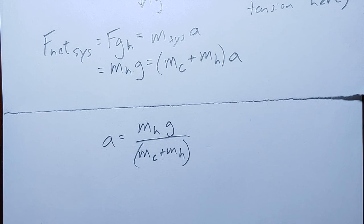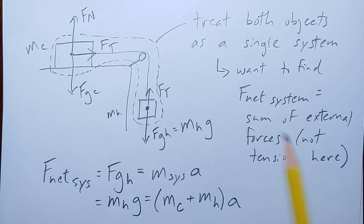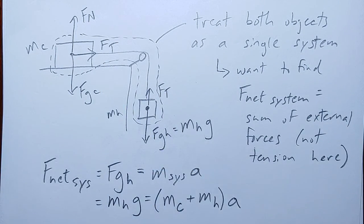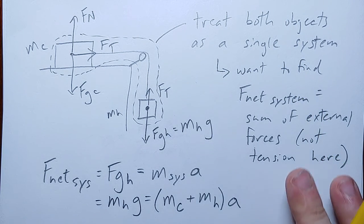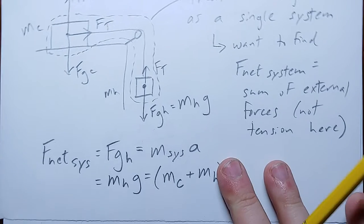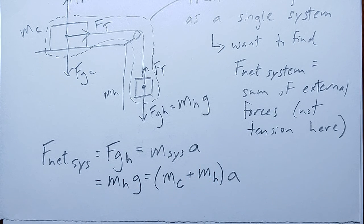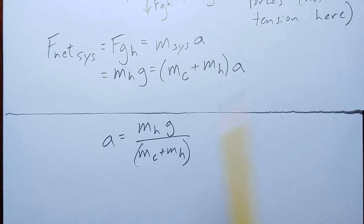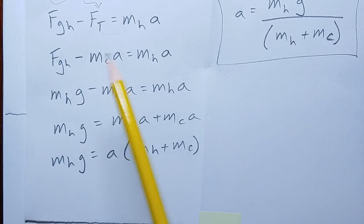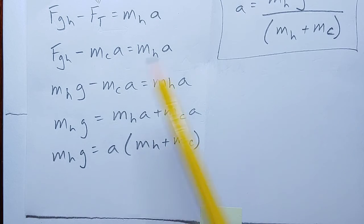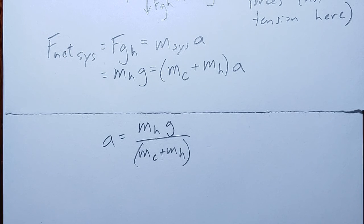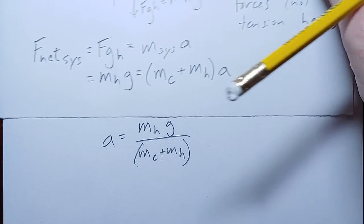This alternate approach took significantly less work. It required some mental gymnastics to recognize this as a system, but once you're used to working with systems, you just recognize the net force is FGH, the mass is the total system mass, and in two quick steps you get the acceleration expression. Compare that to all the algebra we had to do dealing with tension and treating them as separate objects. The system approach, when you can use it, is significantly faster. Both approaches work, and if you have time to do both, they should give the same answer — a nice way to check your work.